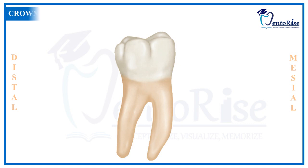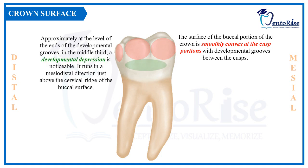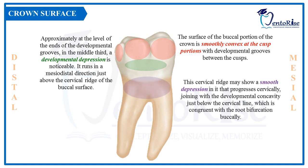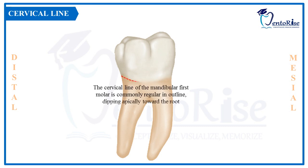Regarding the surface of the crown buccally: at the cusp portions the surface is smoothly convex. Cervical to these convex portions there is a developmental depression running in the meso-distal direction, shown in green in the figure. Cervical to this developmental depression there is also a smooth depression that progresses cervically, joining with the developmental concavity just below the cervical line, congruent with the root bifurcation buccally, demarcated in purple. The cervical line of the permanent mandibular first molar is commonly regular in outline, dipping apically towards the root bifurcation.